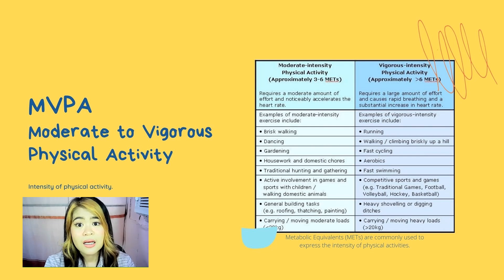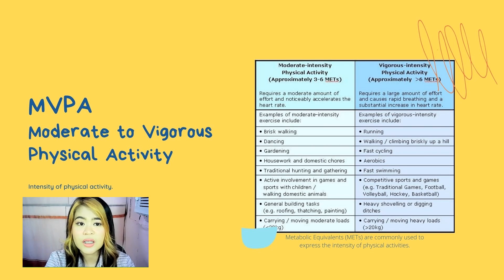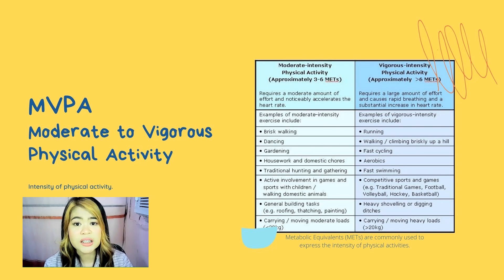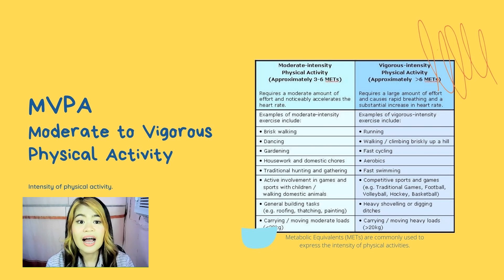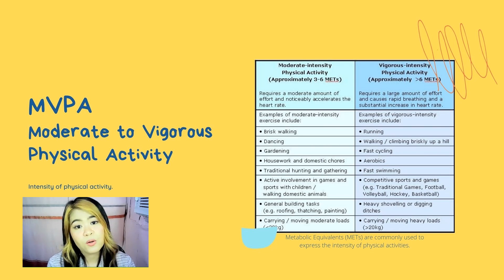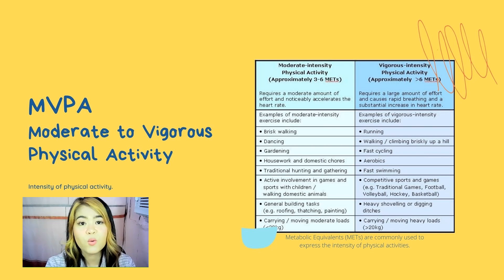So, how are METs calculated? To better understand METs, it's helpful to know a little about how your body uses energy. The cells in your muscles use oxygen to help create the energy needed to move your muscles. One MET is approximately 3.5 milliliters of oxygen consumed per kilogram of body weight per minute.